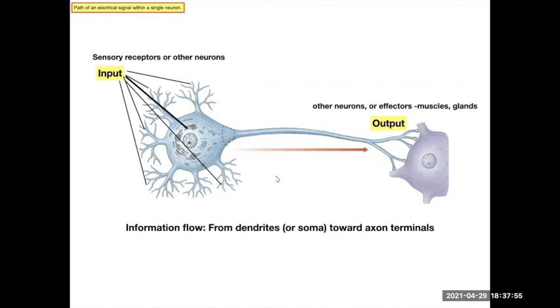So that's your path of a signal: dendrites, cell body, axon, axon terminals. We'll come back to this subject of input and output because that'll be the basis on how we classify certain types of neurons into the functional types. We'll see you next time.